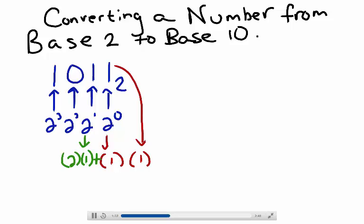Next, I'll take 2 squared, which is 4, and multiply that by 0.